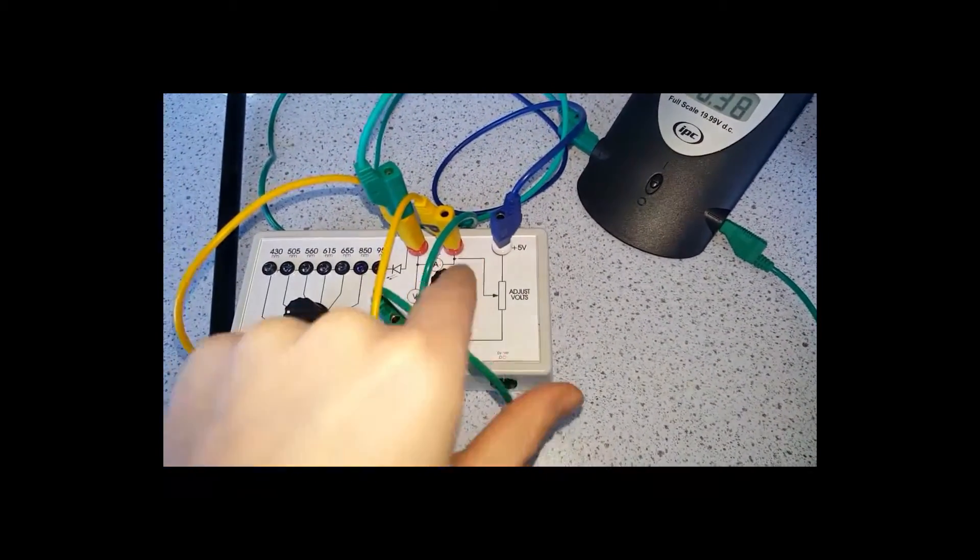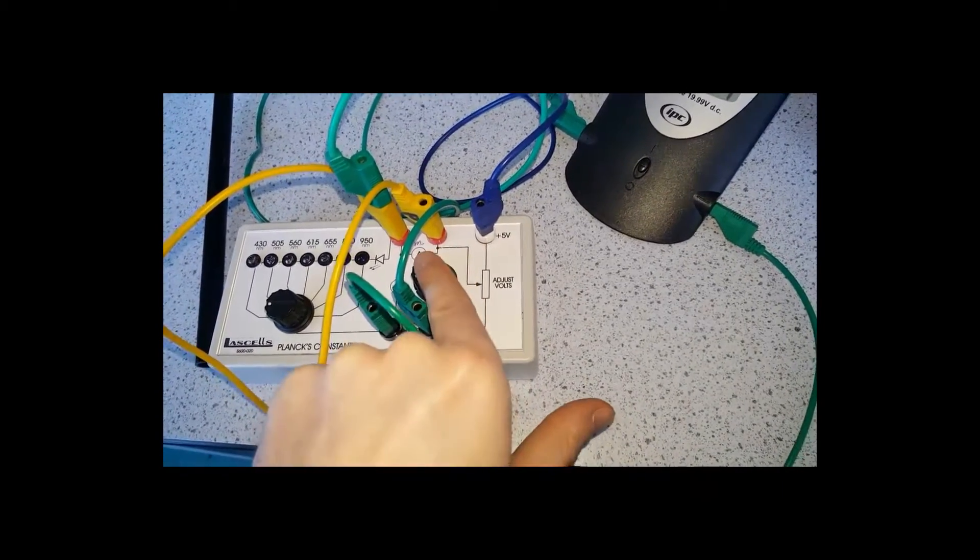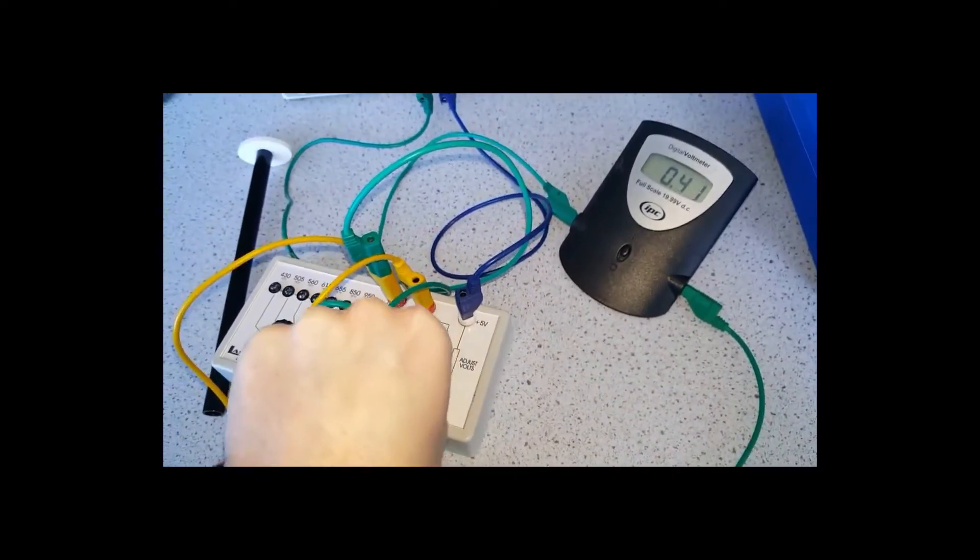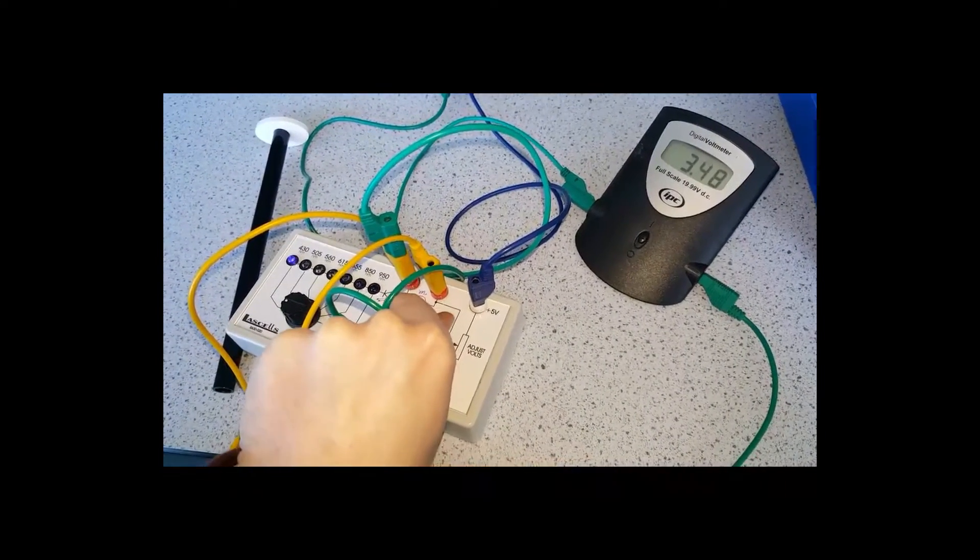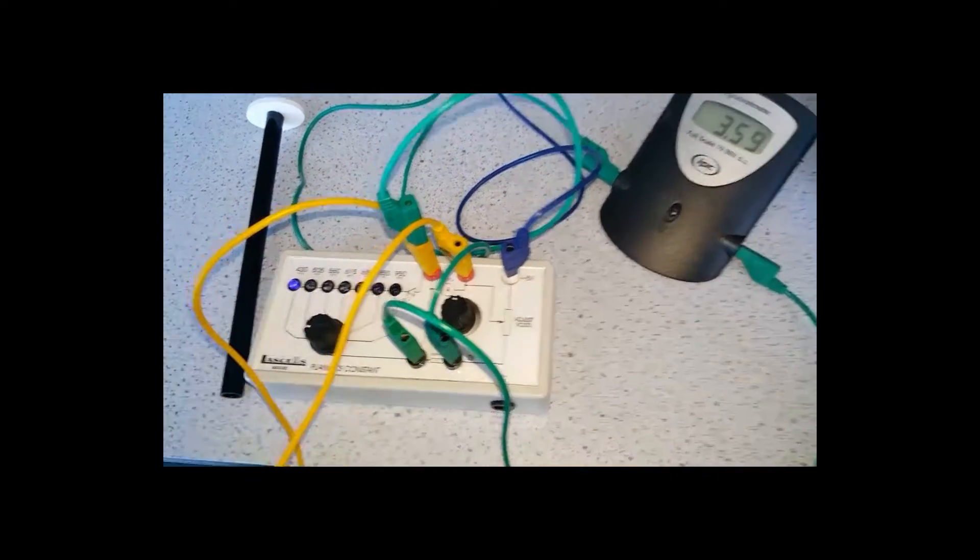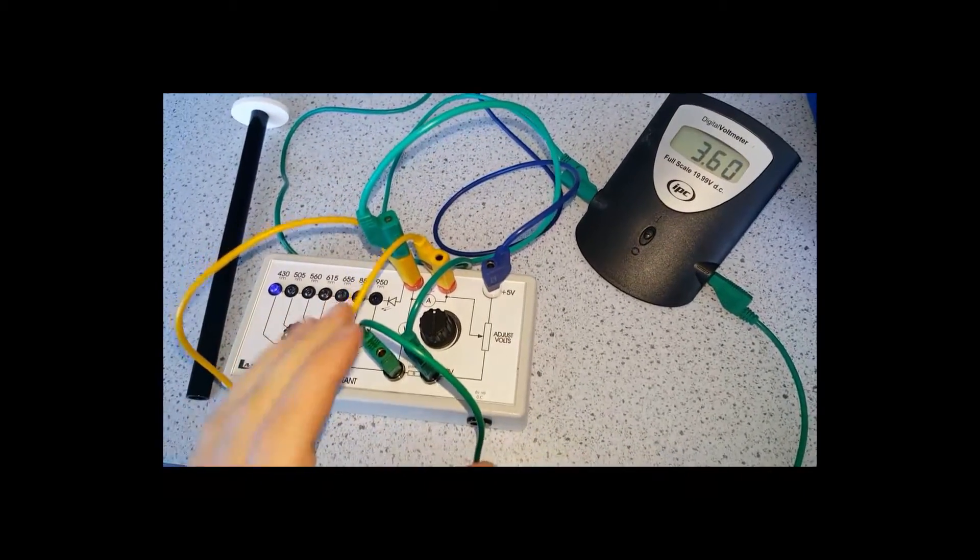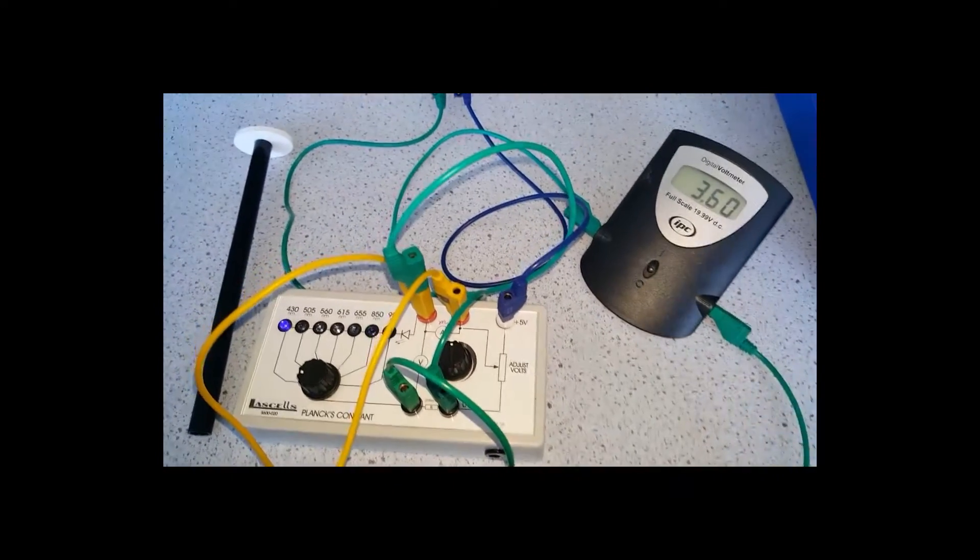And we have a potential divider here, a potentiometer, which allows us to vary the voltage applied to the LEDs. You can see if I do that, eventually this LED on this side has lit up. So what we're looking for is the minimum voltage needed to allow these LEDs to light.